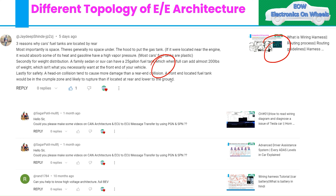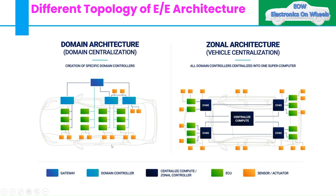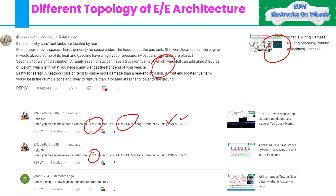We also got a request from a subscriber to create content on CAN architecture — specifically on how issue message transfer happens through PGN and SPN, what those things are. We will come to these topics on CAN architecture and how the issue message is transferred via PGN and SPN, as these are the formats on the software side.